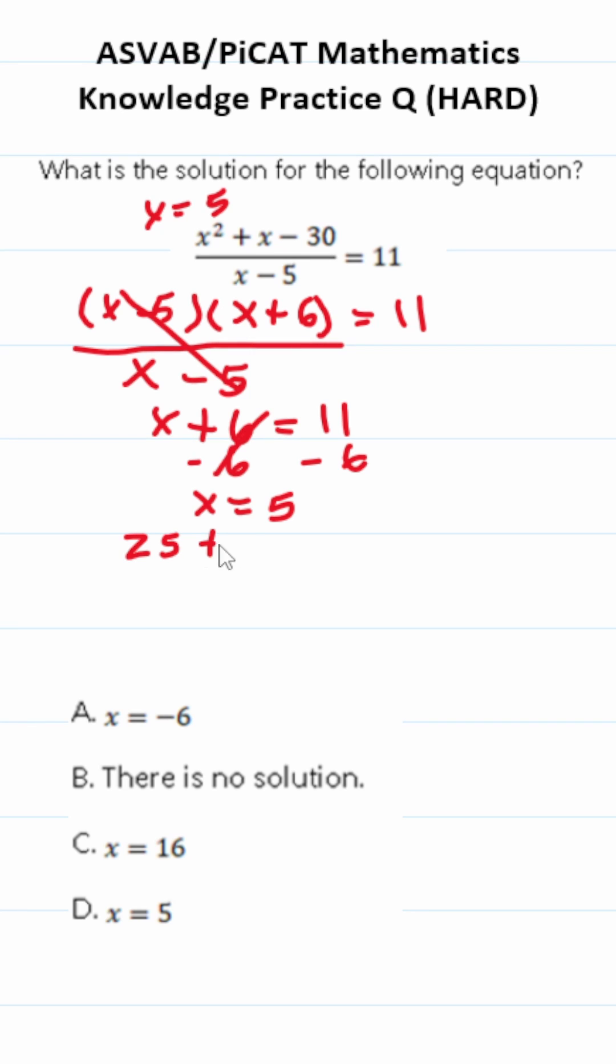This becomes 25 plus 5 minus 30 over 5 minus 5 equals 11. If you do the math here, this becomes 0 over 0 equals 11.